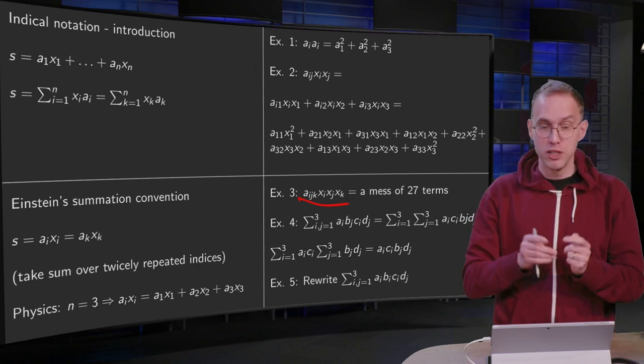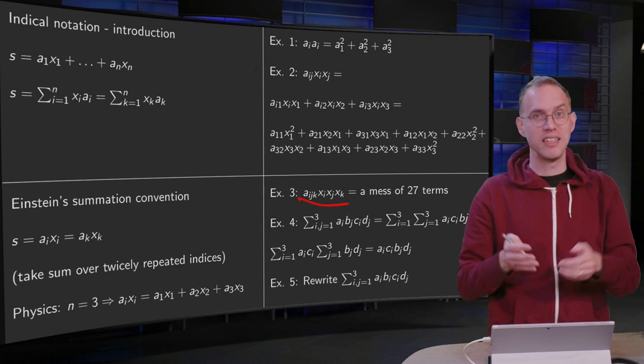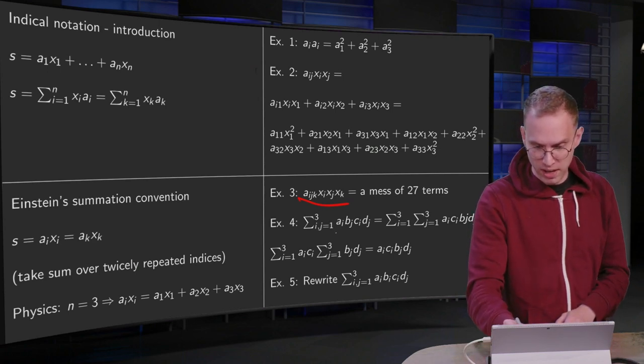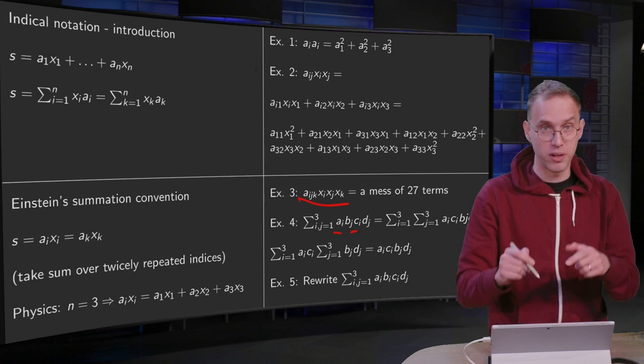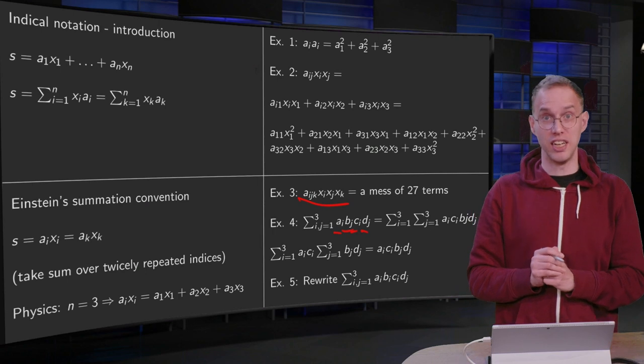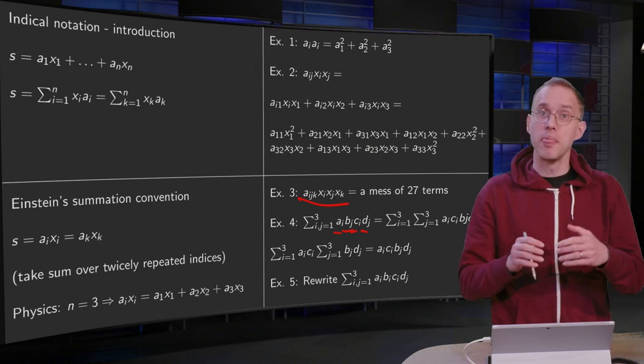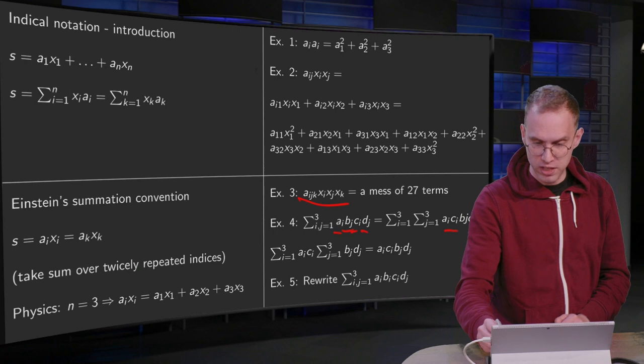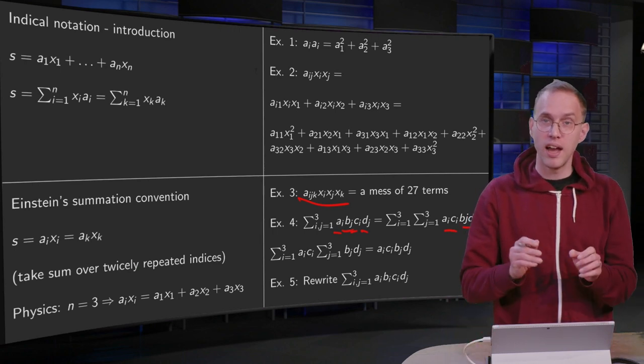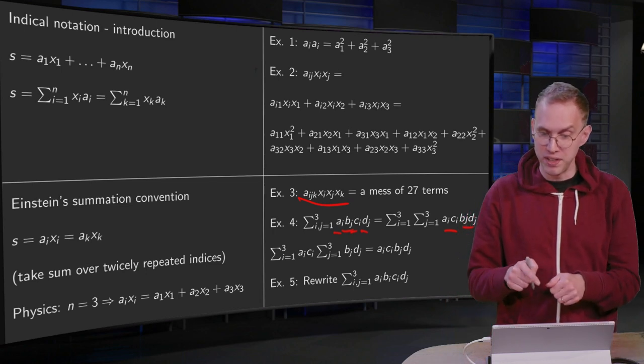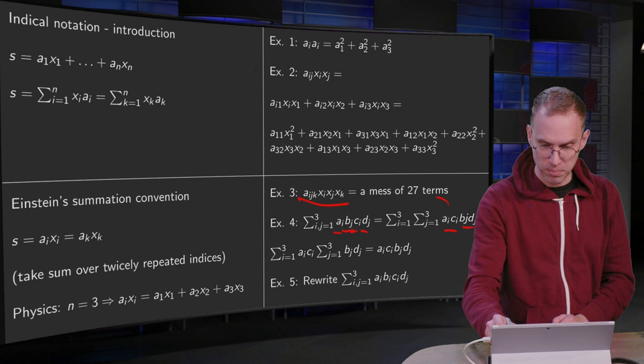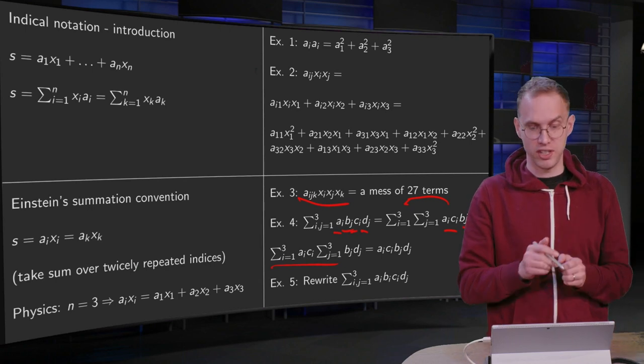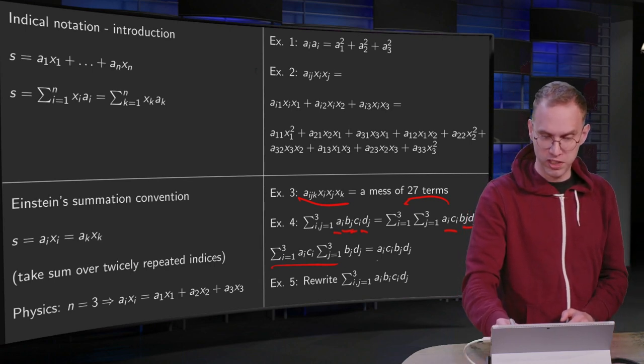Okay, now let's go the other way around. So starting with a sum and writing it using index notation. For example, example 4 here. So we have sum i equals 1 to 3, aᵢcᵢ, and sum j equals 1 to 3, bⱼdⱼ. Now the aᵢ and so on are just numbers, so you can alter the order. And then the aᵢ and the cᵢ do not feel the sum over j, they do not depend on j, so you can take them in front. So you have a sum i equals 1 to 3, aᵢcᵢ, which can be written using summation convention as aᵢcᵢ.